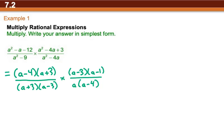Looking, we have (a + 3) with (a + 3) we can cancel. We have (a - 3) with (a - 3). And (a - 4) with (a - 4).